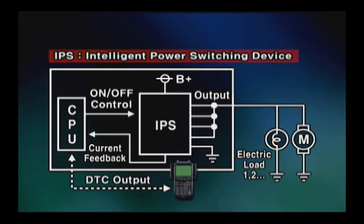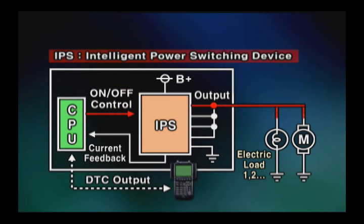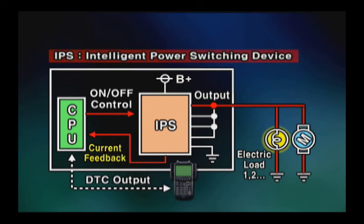As the CPU sends the on-off operation signal of motor or lamp to the IPS, the IPS outputs the electric power for operating the electric load. At the same time, the IPS detects the current flowing through the output terminal and feeds it back to the CPU.